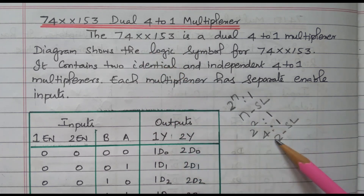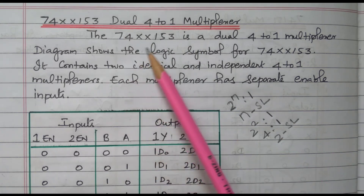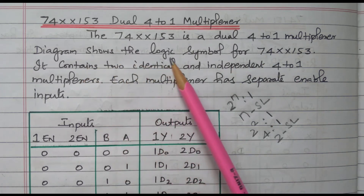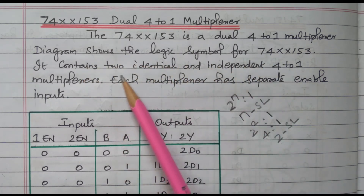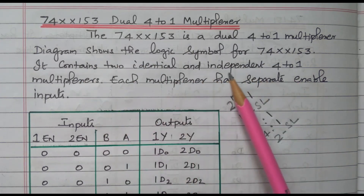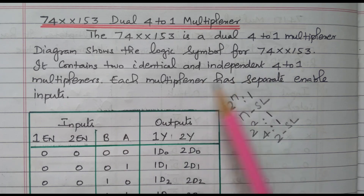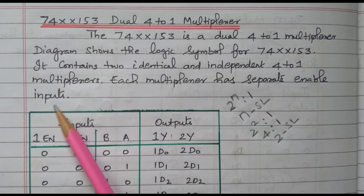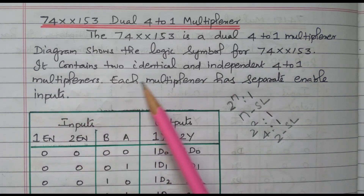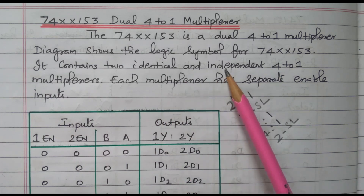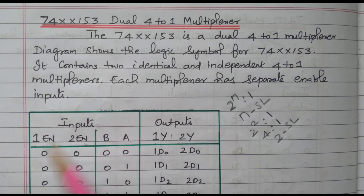Dual means two sets of 4-to-1 multiplexer are available. The 74153 is a dual 4-to-1 multiplexer. The diagram shows the logic symbol — it contains two identical and independent 4-to-1 multiplexers. Each multiplexer has separate enable inputs, so we can operate the two 4-to-1 multiplexers individually and independently.